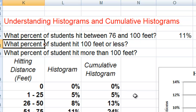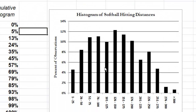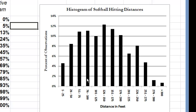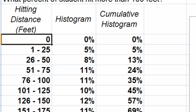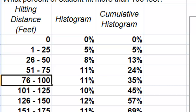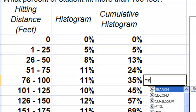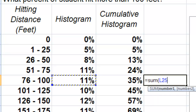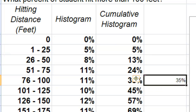There are two ways we could answer this. One, we could come to our histogram, find the interval containing 100 feet, and add the percent of students between 76 and 100 feet, between 51 and 75 feet, 26 and 50 feet, and 1 to 25 feet — adding this bar plus that bar plus that bar plus that bar. I want to show you that right here in our table. I'm going to find the entry 76 to 100, then sum the percents for 76 to 100, 51 to 75, 26 to 50, and 1 to 25 feet. When I do that, I get 35%.